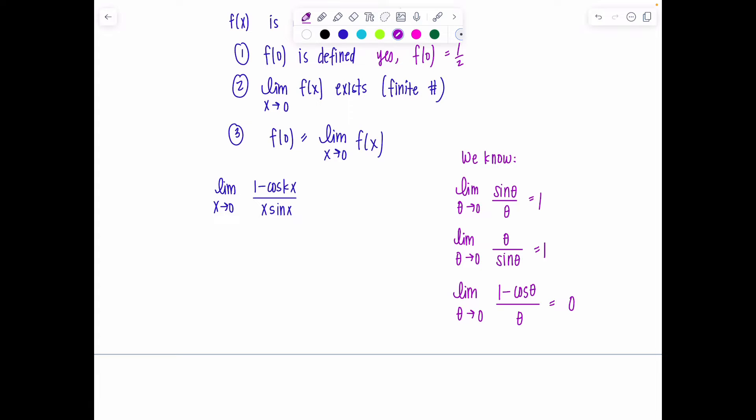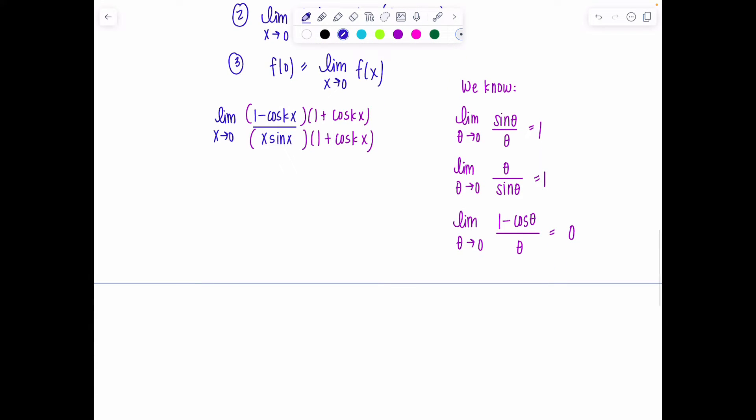At first glance, I was tempted because of this 1 - cos(kx) to try to use this limit rule, but it didn't help out. So instead, once I saw that that was futile, I decided to multiply by the conjugate. Conjugate of the numerator. That's something common you'll do with trig functions because then you can use a Pythagorean identity. So I'm going to multiply by 1 + cos(kx).